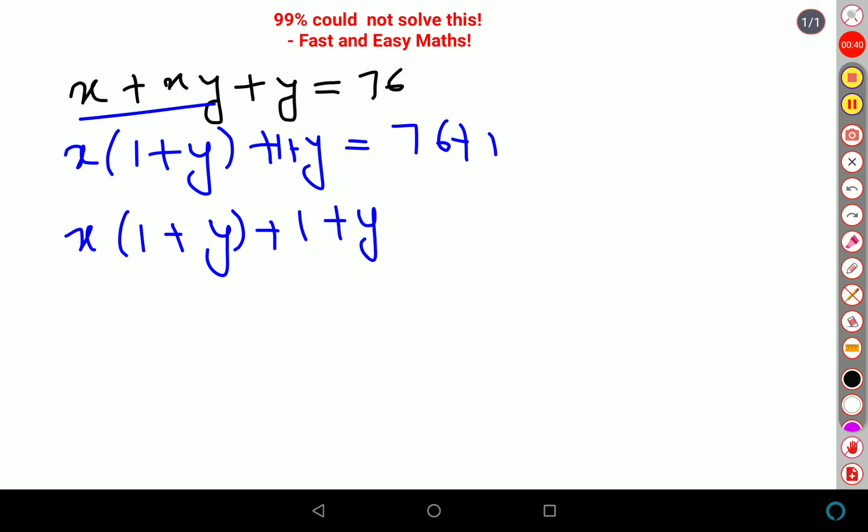If you look closely I can take (1 + y) common. When I do that I'm just left with (1 + y)(x + 1) equals 77. Now after coming here lot of students got stuck because they did not know how to factorize this further.